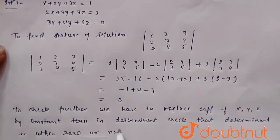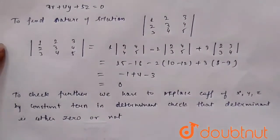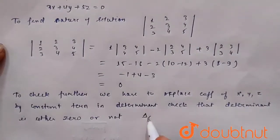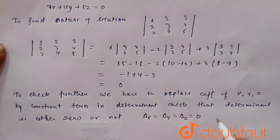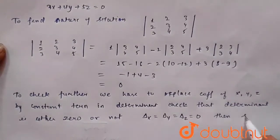If all the determinant value on replacing x, y, and z, here delta x, delta y, and delta z, all are equal to 0, then the solution is infinite.